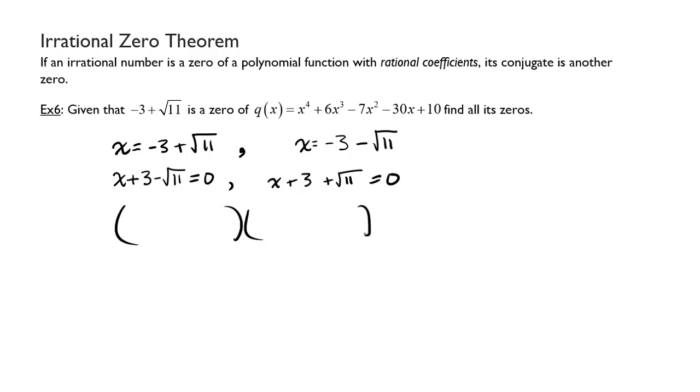This will give me two factors again equal to zero. I'll have x plus 3, I'm just dropping these down, minus root 11 and x plus 3 plus root 11. Now I want you to notice that the x plus 3 is the same in both of the groupings.